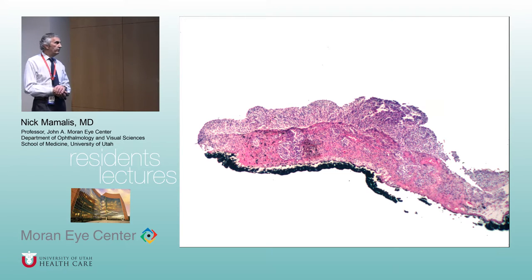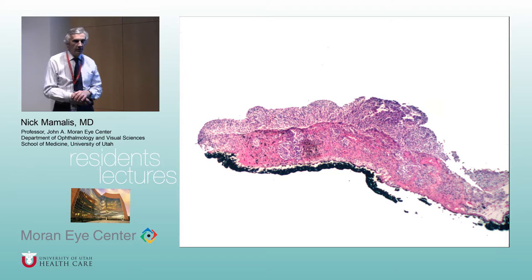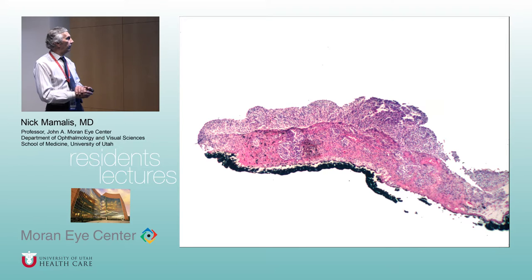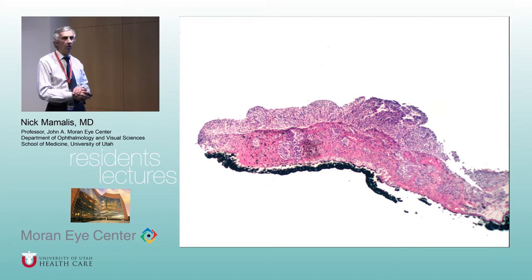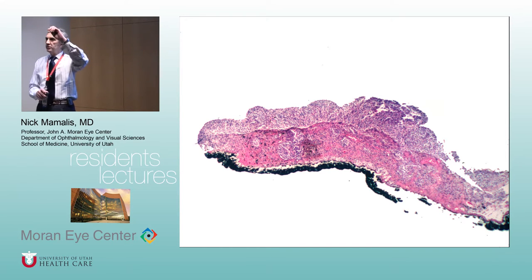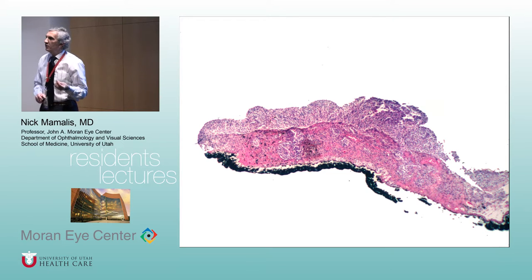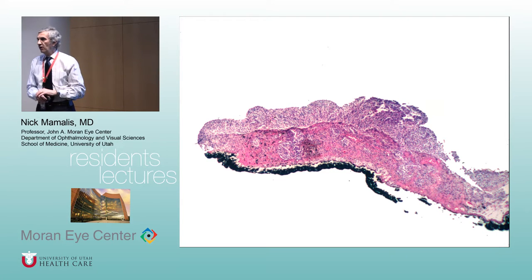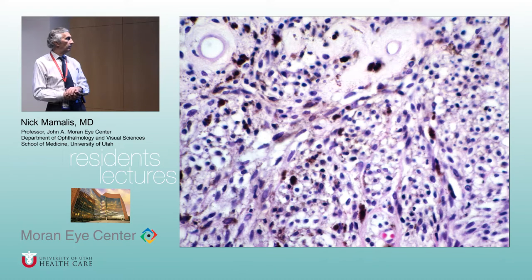Next, looking at a piece of iris: there are lots of cells on the surface of the iris — we call that a plaque. So you have spindle nevus, then spindle nevus with plaque. These look a little more alarming because they start to grow more, and sometimes people do a peripheral iridectomy on these.